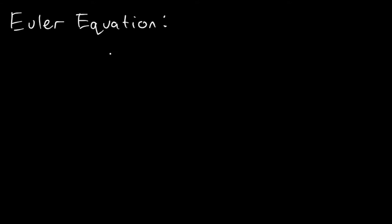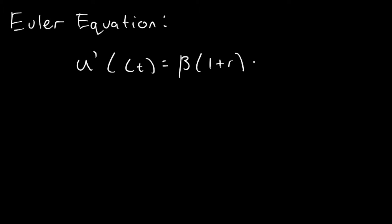Long story short, this is our Euler equation: the marginal utility of consumption at time t is equal to the rate of time preference beta, multiplied by 1 plus the interest rate, multiplied by the marginal utility of consumption at ct plus 1. So this is our Euler equation.